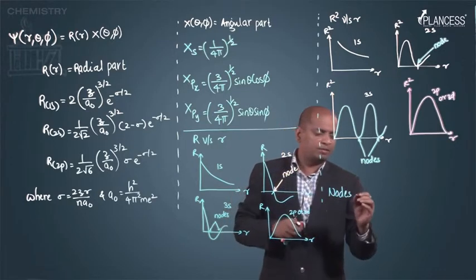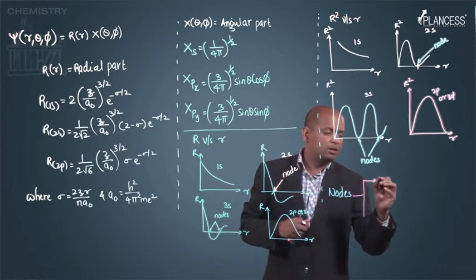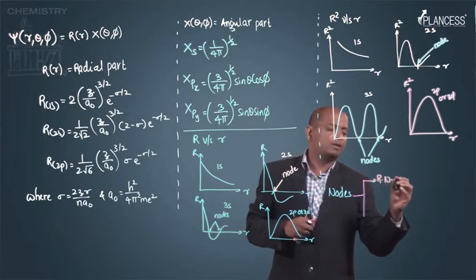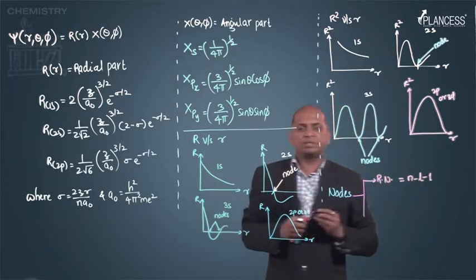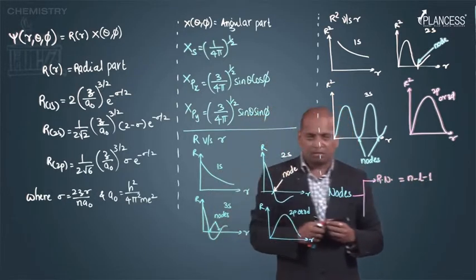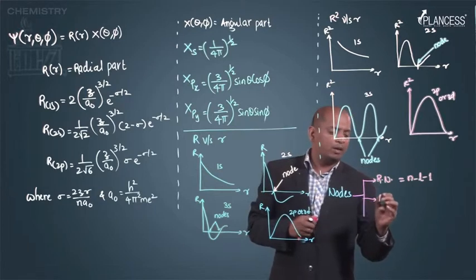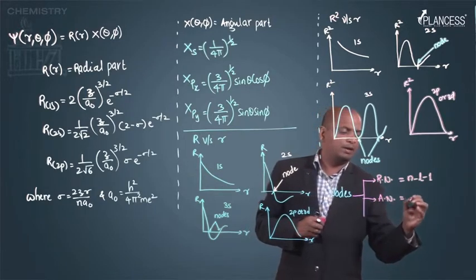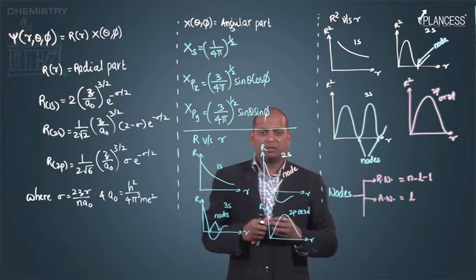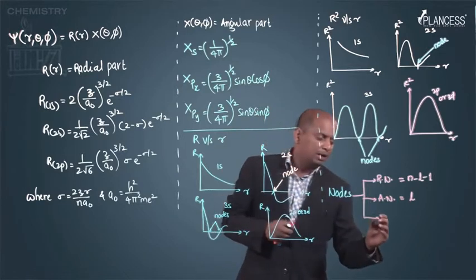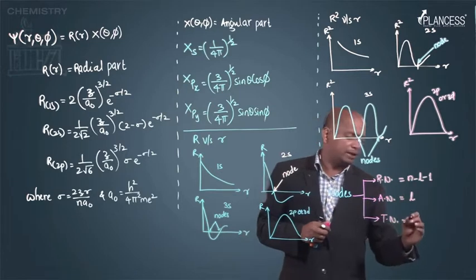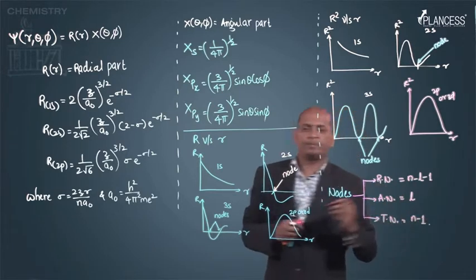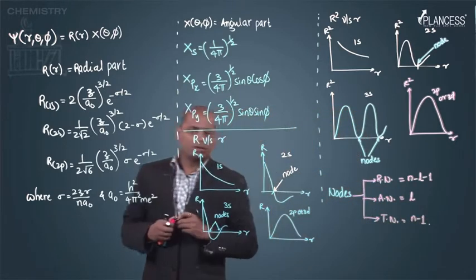Total nodes - we have three types of nodes to consider. Radial node formula: n minus l minus 1. n is principal quantum number, l is azimuthal quantum number. Then angular node: l. And total number of nodes - just add these two, so that is n minus 1.